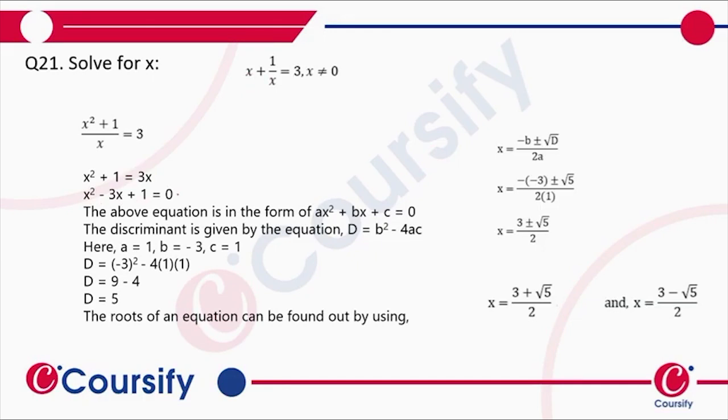x² - 3x + 1 = 0 will be our equation. Here a is 1, b is -3, and c is 1. We'll put it in the formula. We'll get D equals b squared.